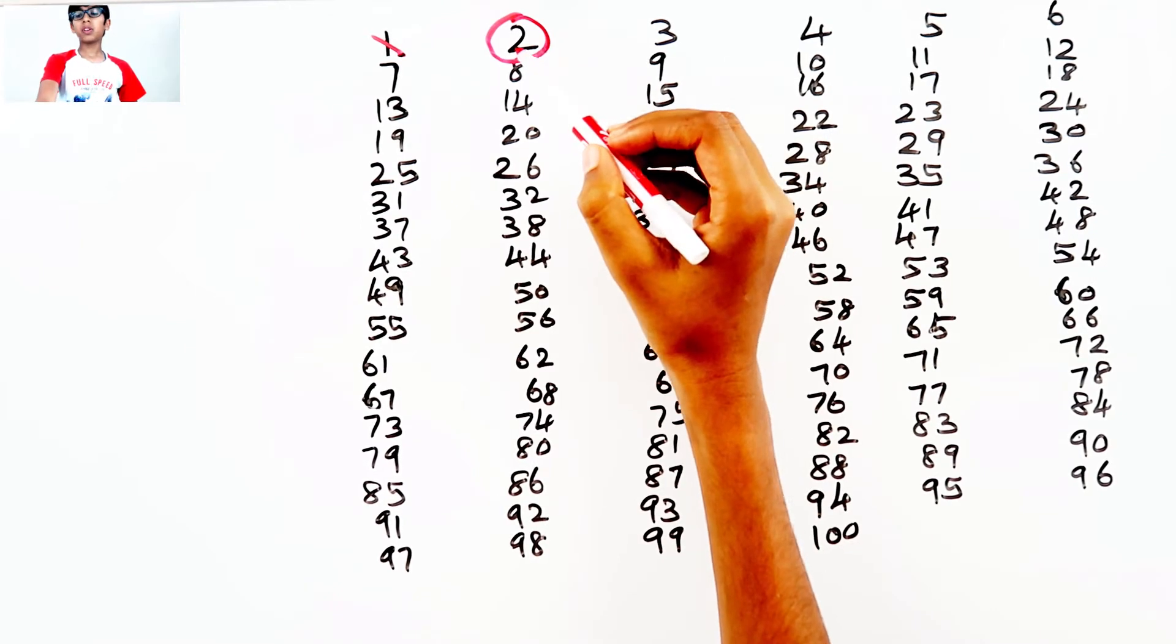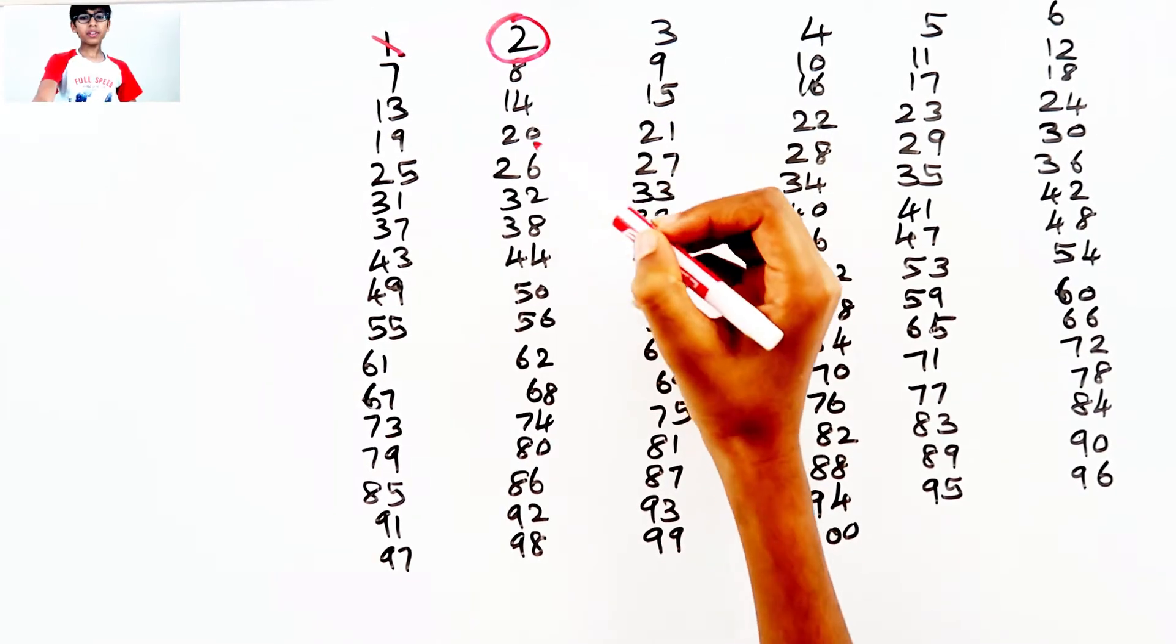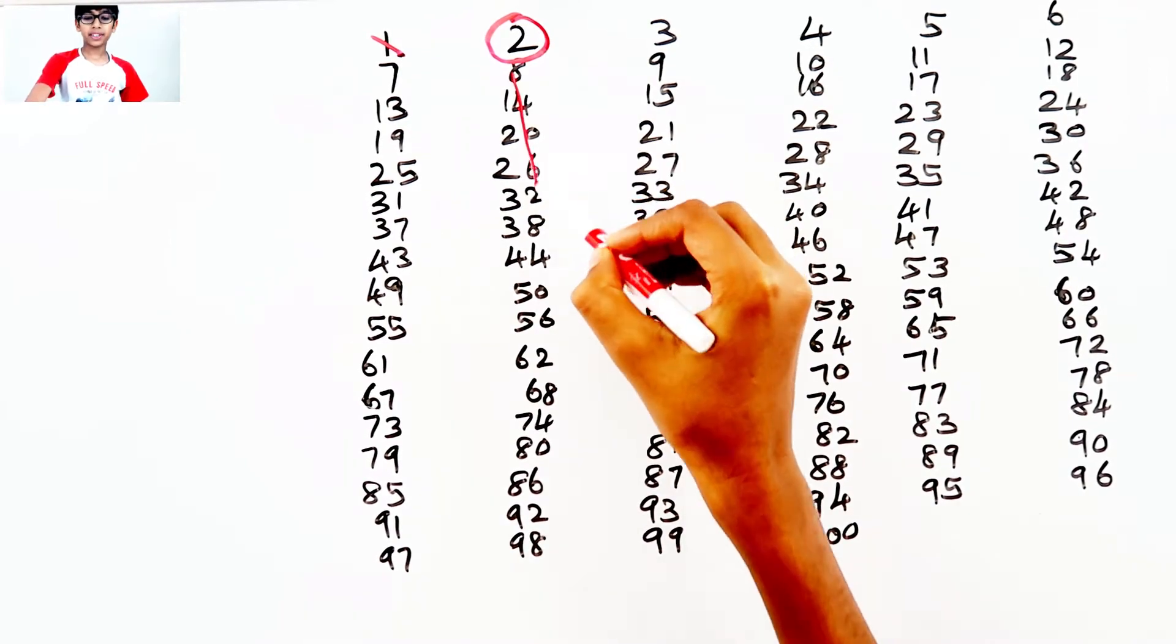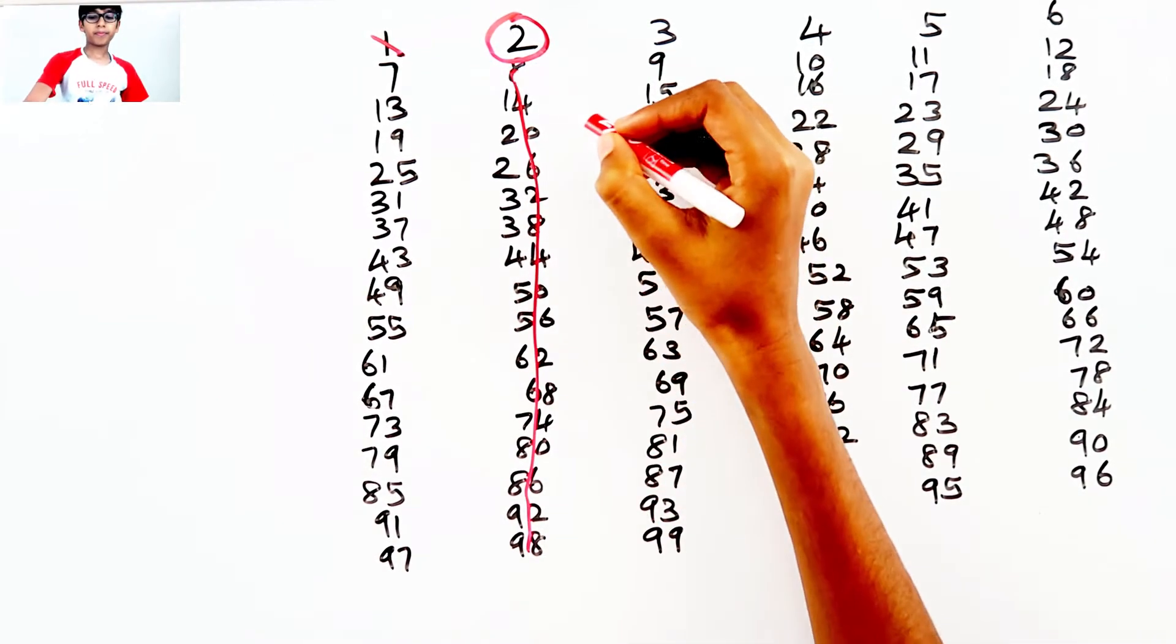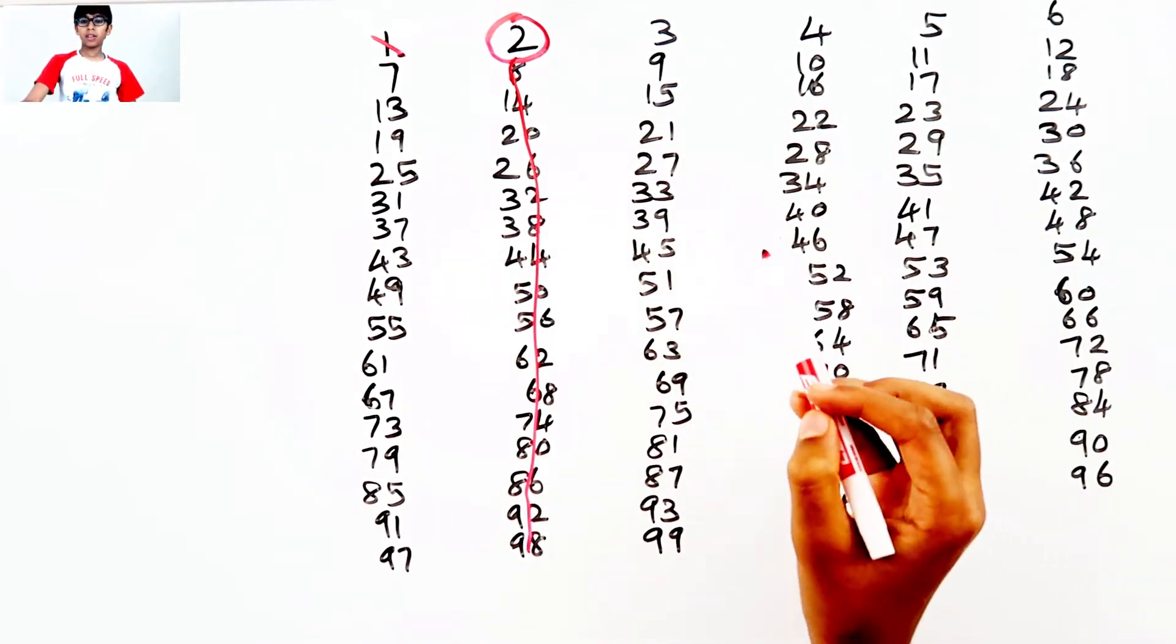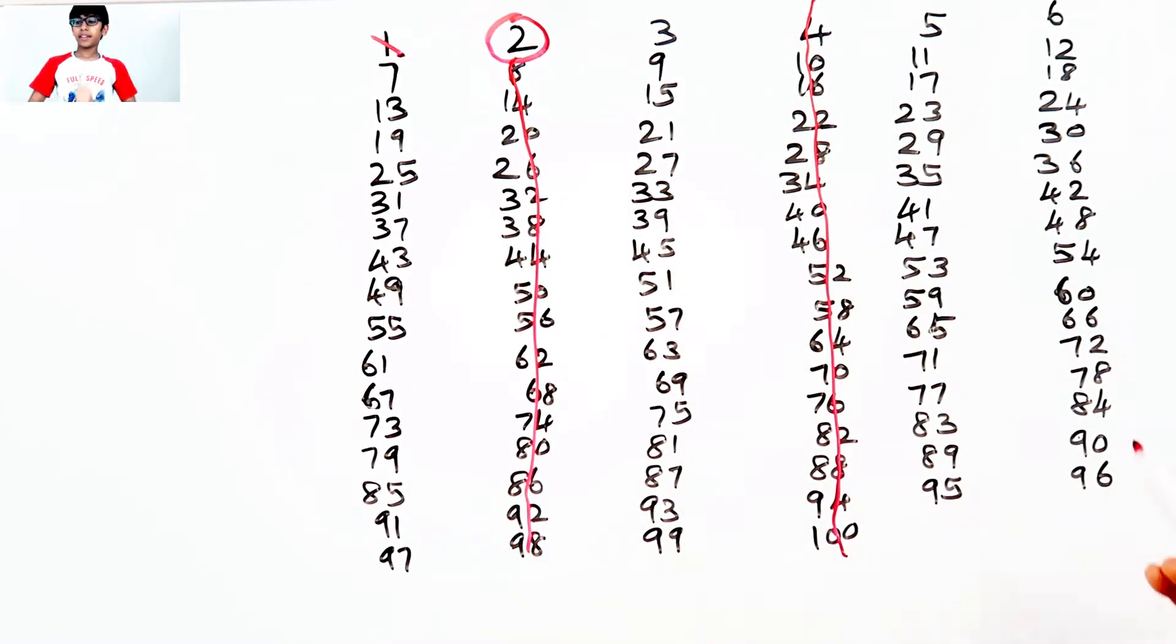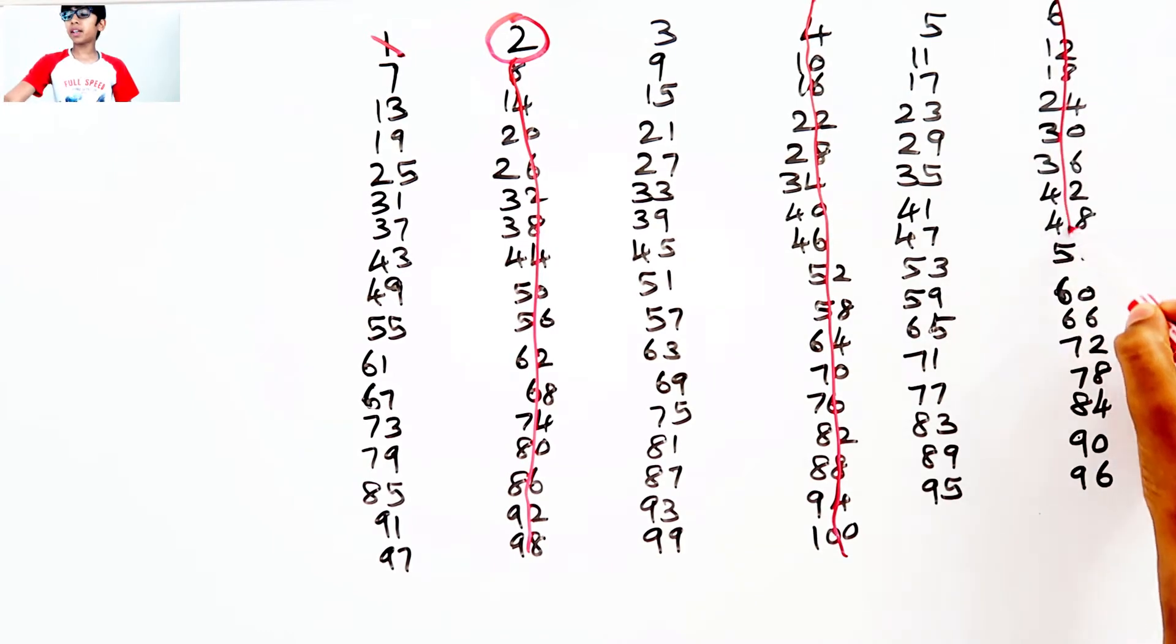All of these numbers can be divided by 2, so let's cross them out. All of these numbers can be crossed out because they can be divided by 2.